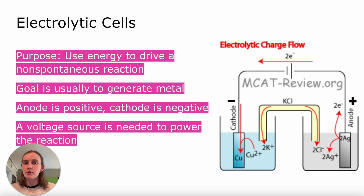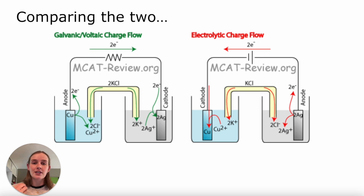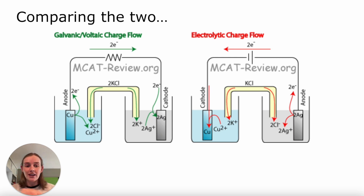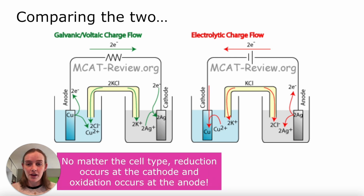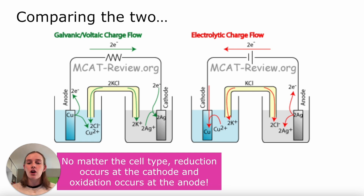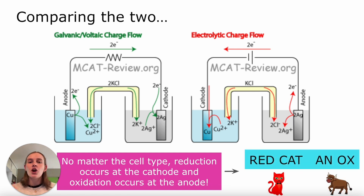Those are a couple of big differences between our two types of cells, but let's compare them side by side. You may notice that electron flow occurs in two different directions in the image, but looking at the actual cells, it is always going from anode to cathode. That is because no matter the type of cell, reduction always occurs at the cathode and oxidation always occurs at the anode — whether you have a positive or negative cathode. We can remember that through our mnemonic: redcat and anox — reduction at the cathode, oxidation at the anode.